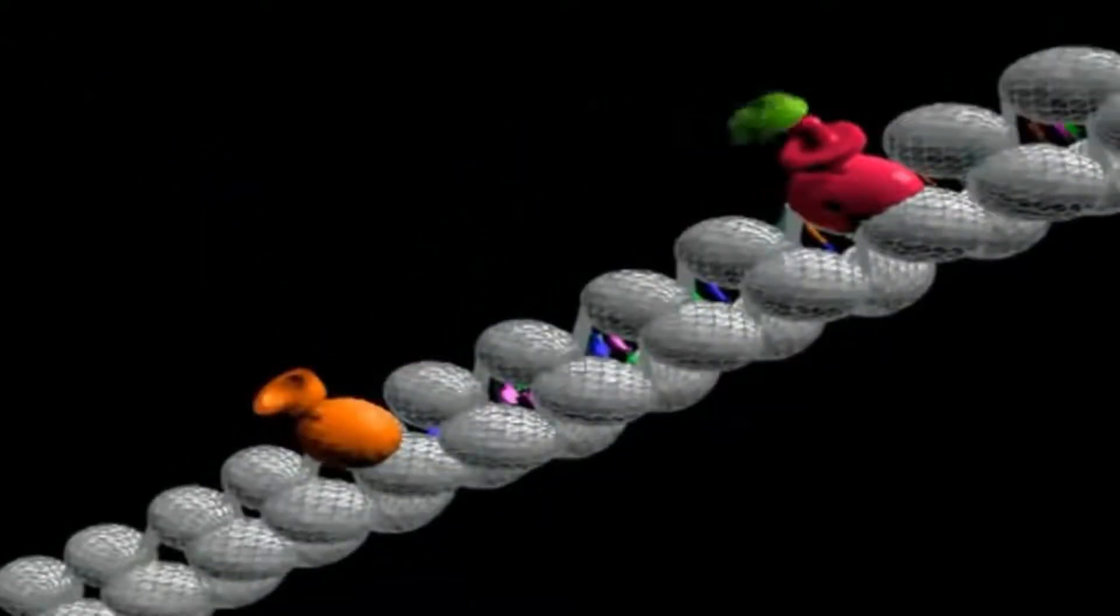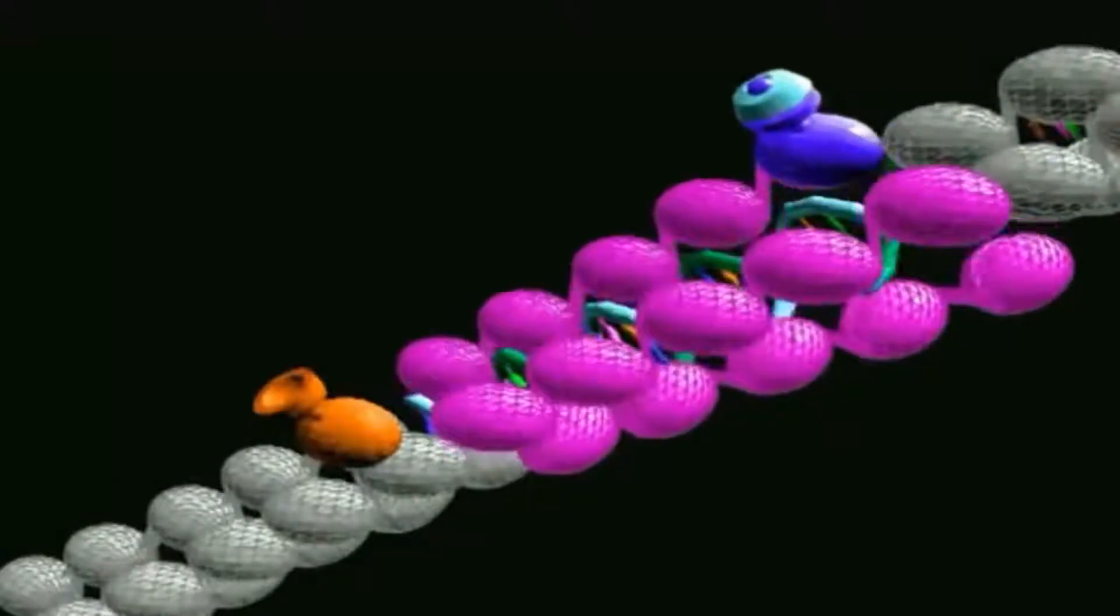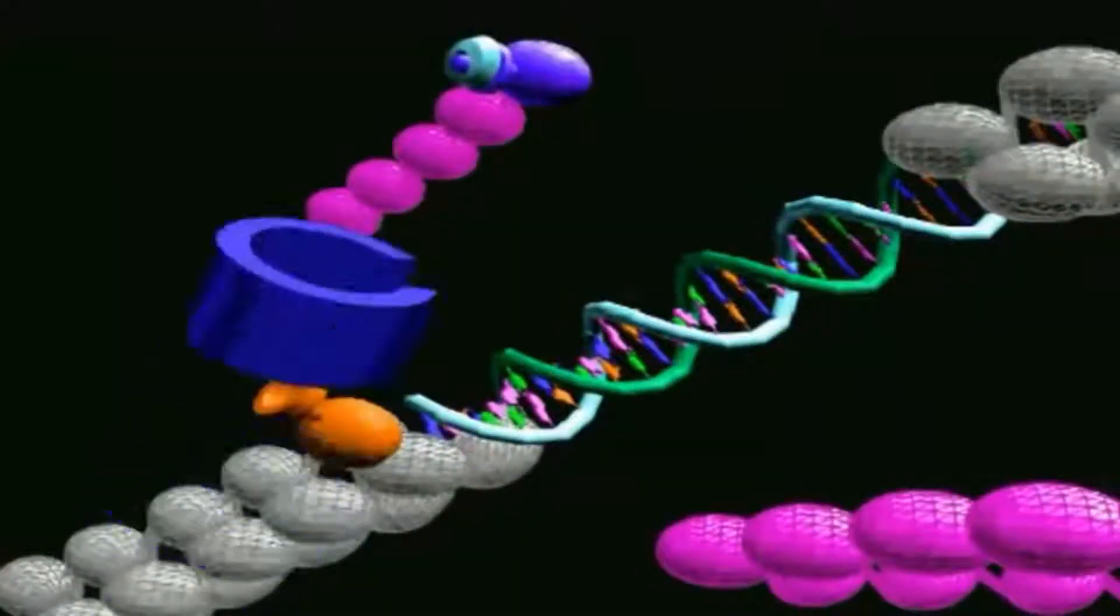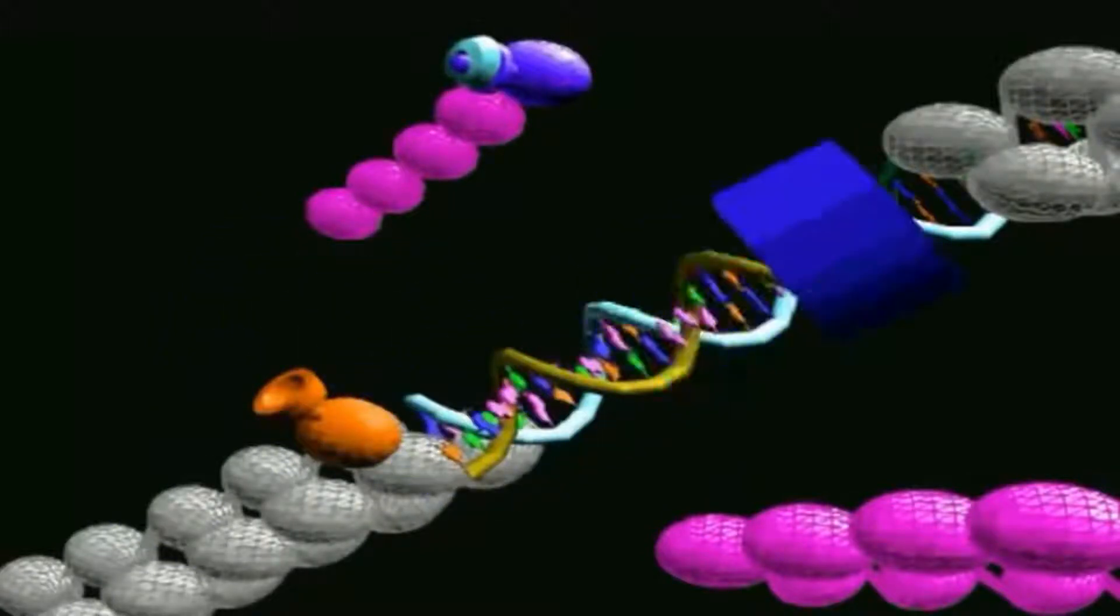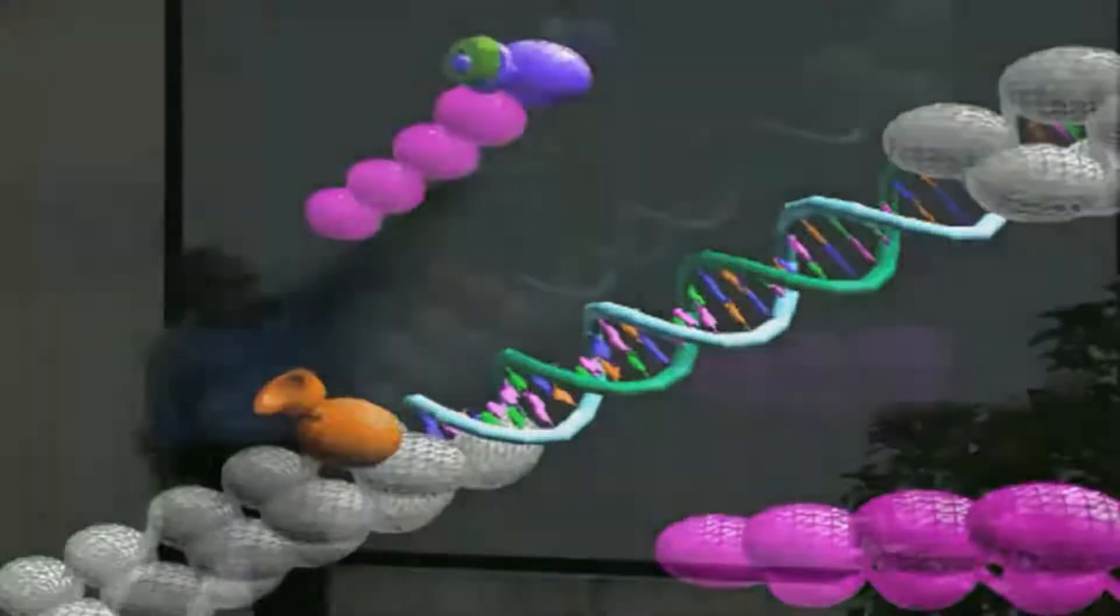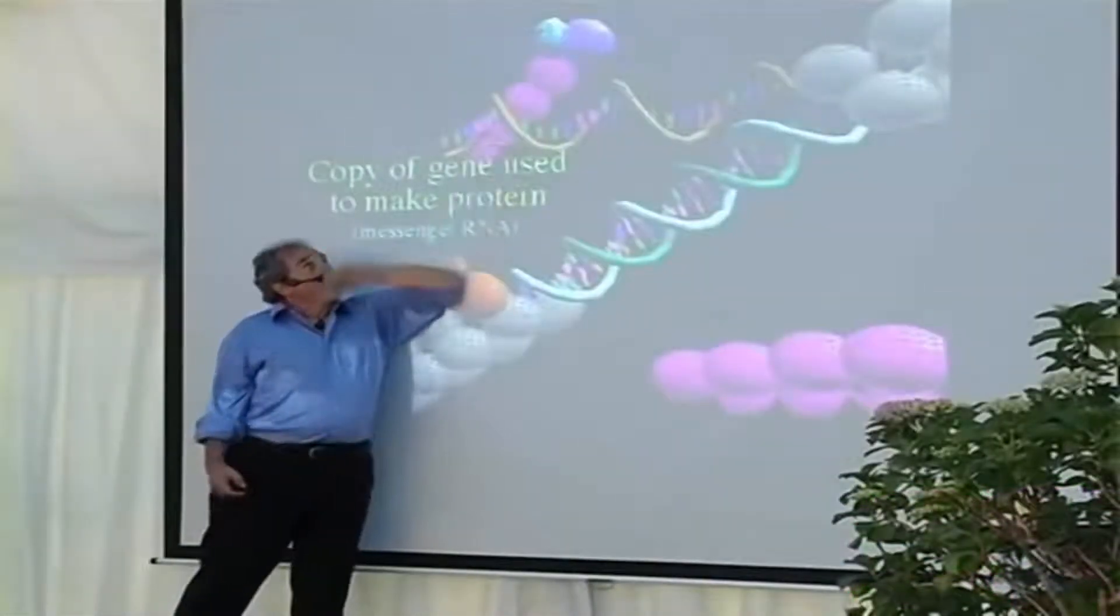The signal binds to a specific protein. The protein sleeve comes off, and then the DNA is exposed. Then a device will come up and make a copy of the gene, and this is the blueprint used to make the protein, RNA.